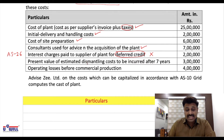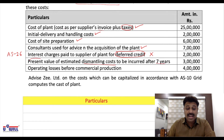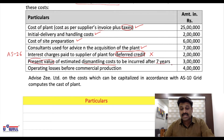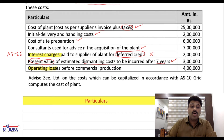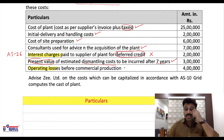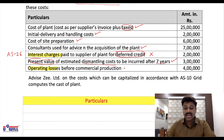Present value of estimated dismantling costs to be incurred after seven years — we discussed this in yesterday's theoretical lecture — is to be included. Operating losses before commercial production begins are not to be included; those are debited to the P&L account.